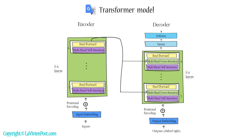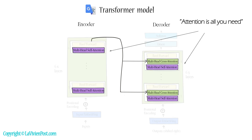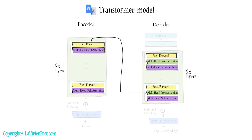In 2017, a groundbreaking transformer model was introduced, solely based on attentional mechanisms. The phrase 'attention is all you need' means attentional mechanisms were used in both encoder and decoder, completely replacing RNN and CNN. In this model, both encoder and decoder have six stacked layers, each with sub-layers of multi-head self-attention and feed-forward.